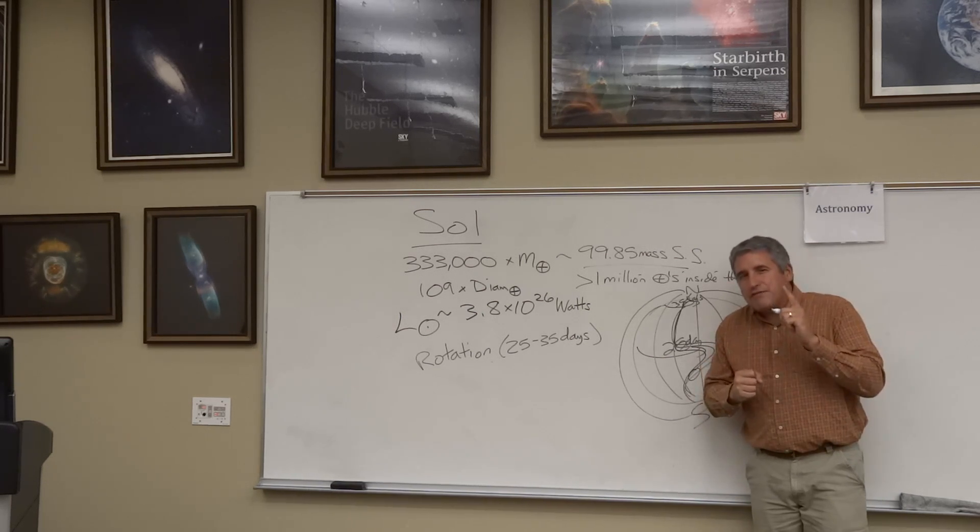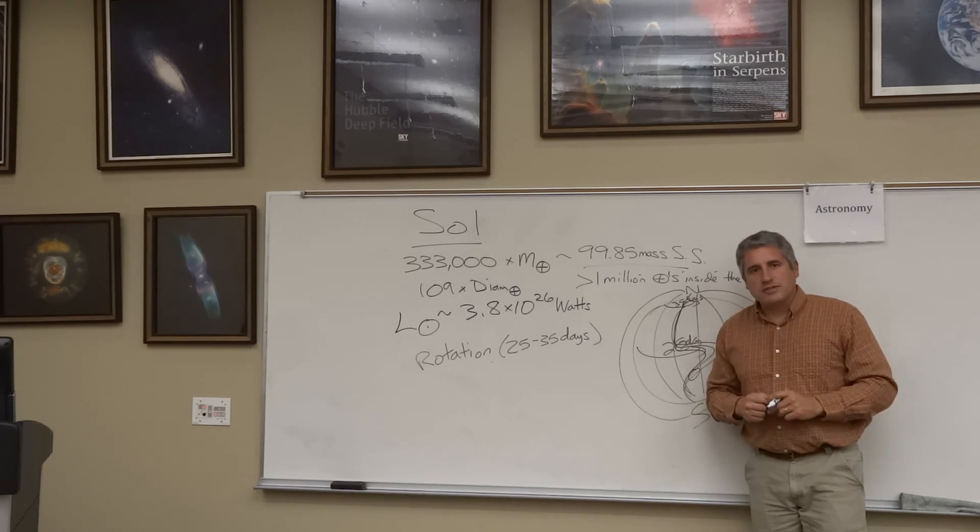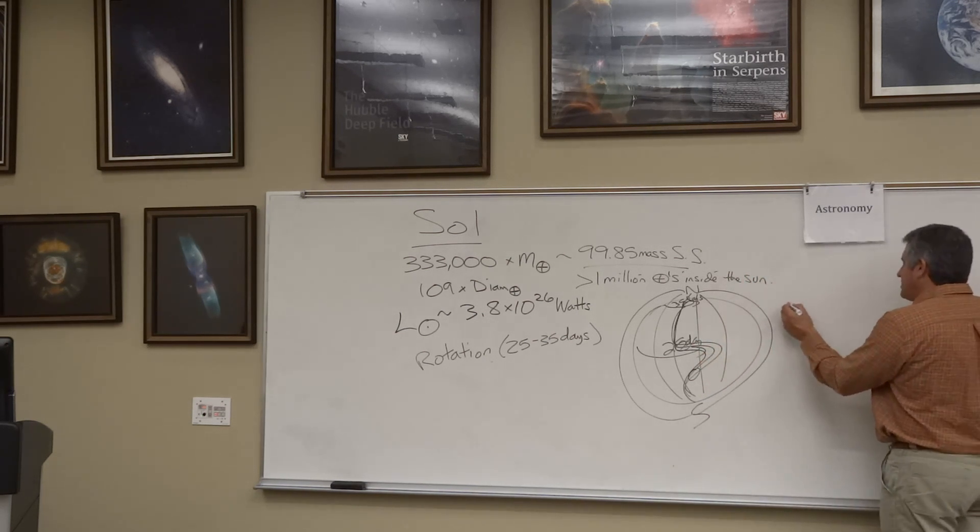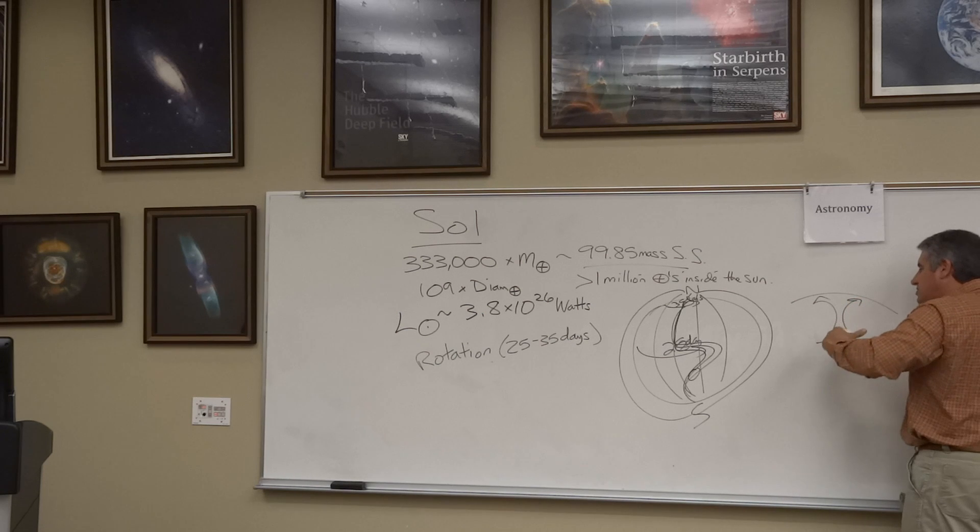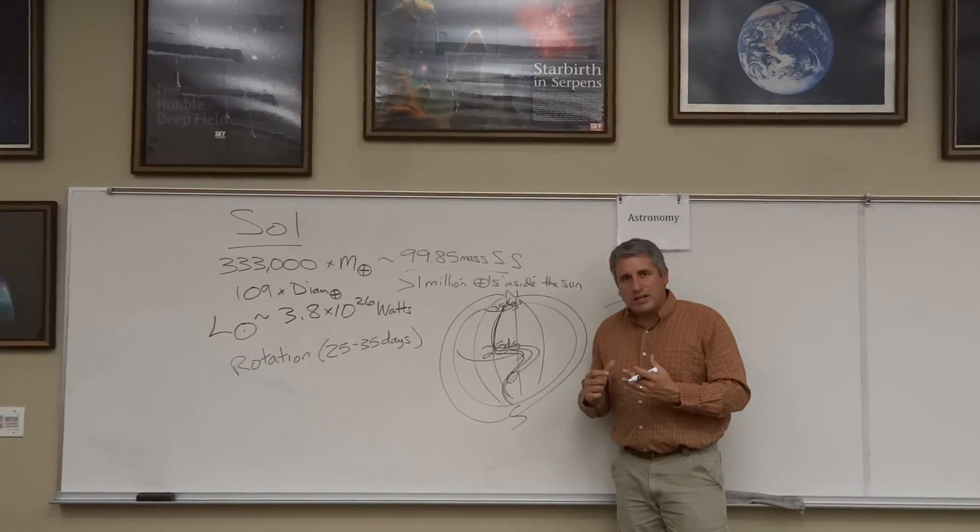Those magnetic knots manifest themselves as sunspots. Dark regions on the surface of the Sun. And around the sunspots, this is the surface of the Sun. Heat wants to rise out of the Sun. It wants to convect out of the Sun. But there's a magnetic lid put on the Sun. The Sun looks like a pot of boiling water when you get up close to it.